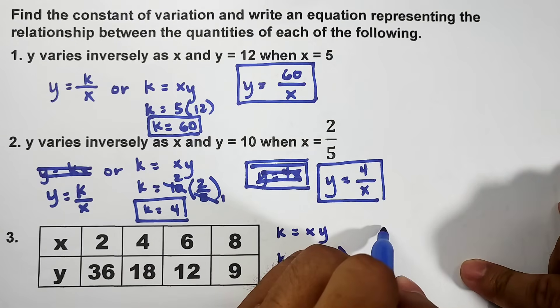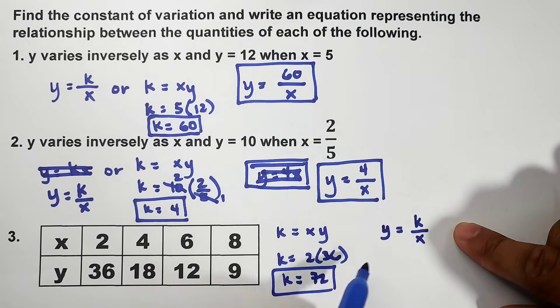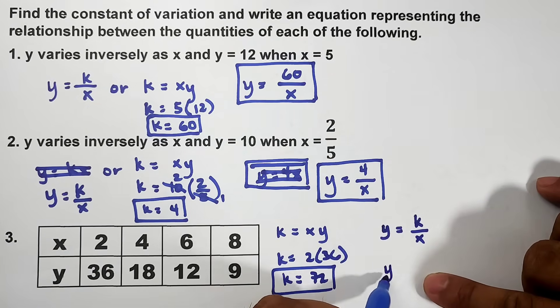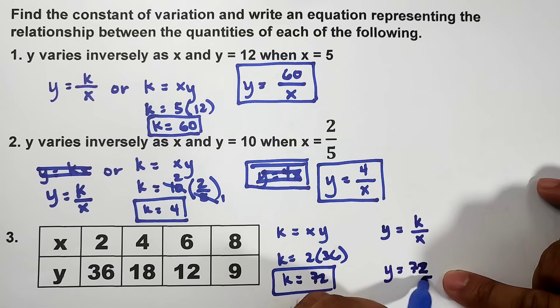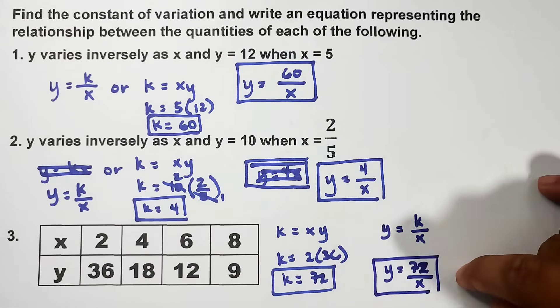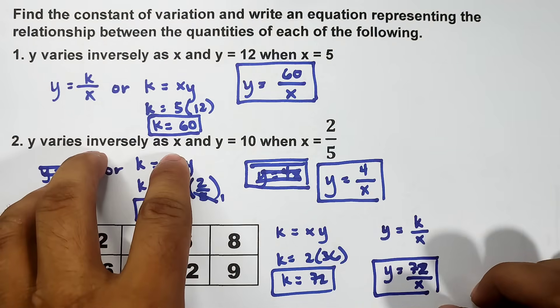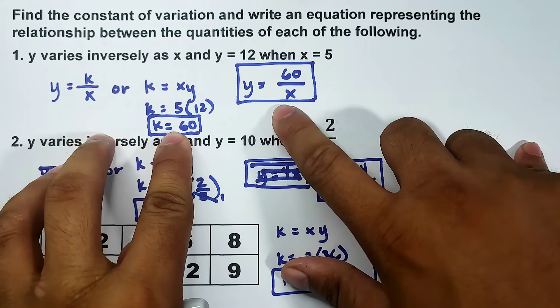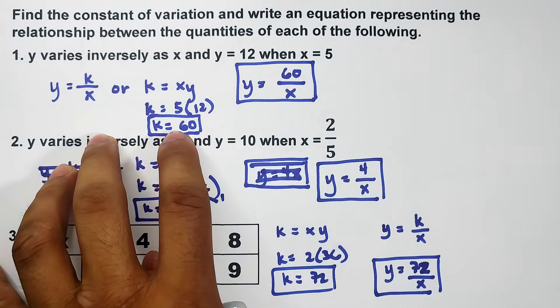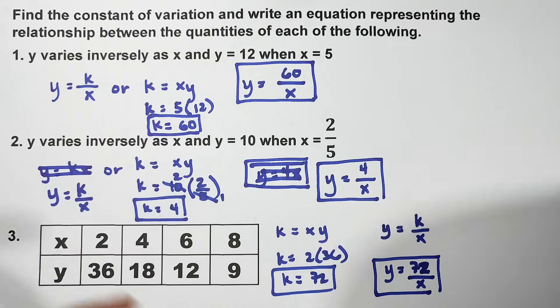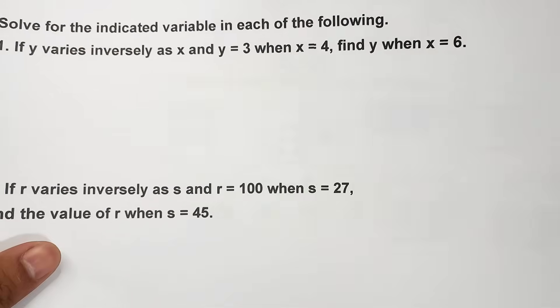Since we already have the constant, let's get the equation. Your original equation is y equals k over x. So what we do now is replace k by 72. You have y equals 72 over x. And this is the answer. As simple as that. First we identify the constant, then we created the equation representing each variation. For the last part of our discussion, it's quite long because we're combining our discussions here.